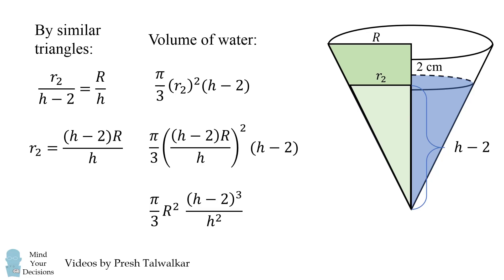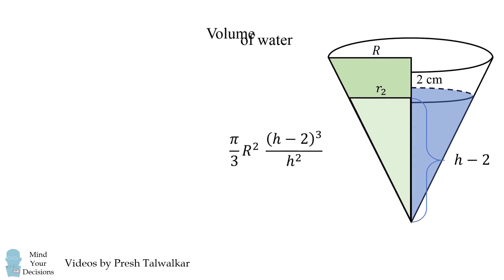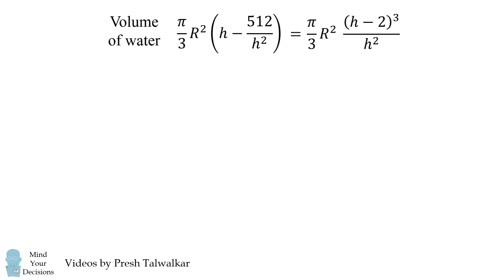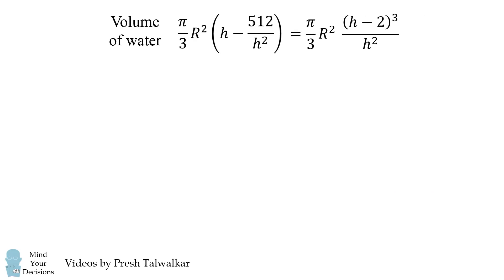So we've arrived at a pretty complicated formula and it doesn't seem like we can solve for the value of h. However, let's see what we can do. We've actually derived two different equations for the volume of water. Since all we've done is turn the cone upside down, we know that the volume of water in both cones has to be equal.